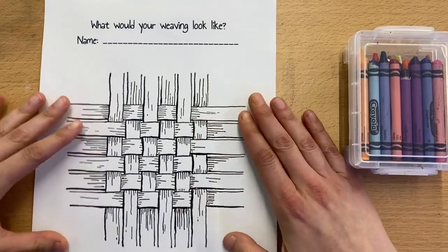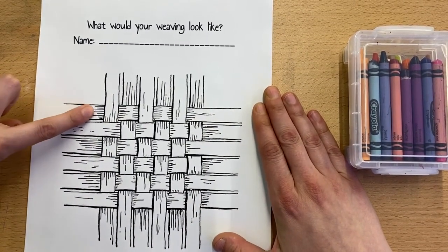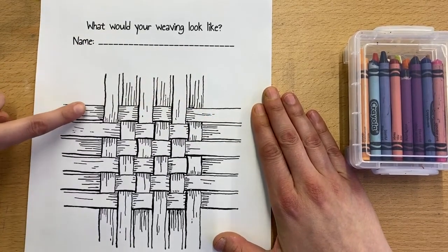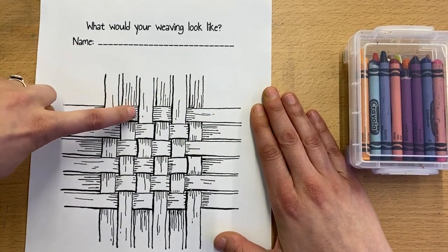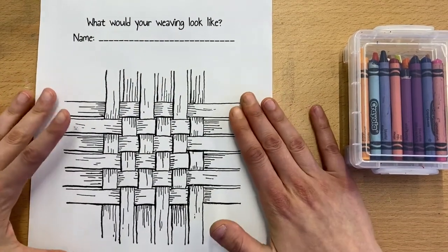So I want you to look at this picture really carefully and hopefully see that each of these pieces that's going across goes under one piece over another, under, over, under, over, and that's how a weaving works.